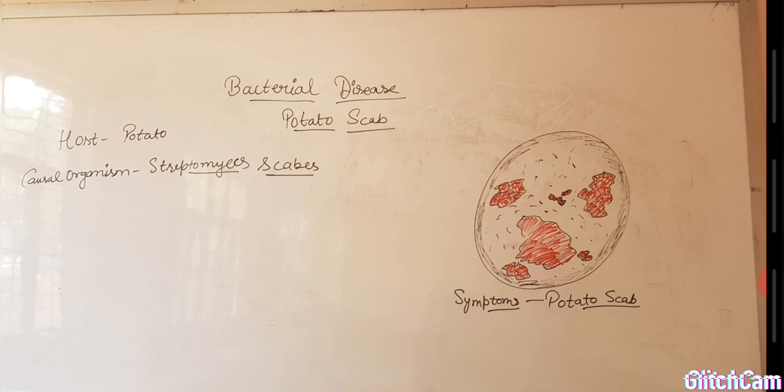Although scab symptoms are usually noticed late in the growing season or at harvest, tubers are susceptible to infection as soon as they are formed. Mature tubers with a well-developed skin are no longer susceptible. But existing lesions will continue to expand as tubers enlarge, increasing disease severity throughout the growing season.